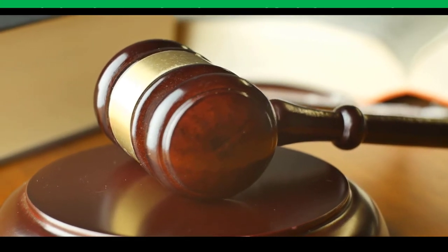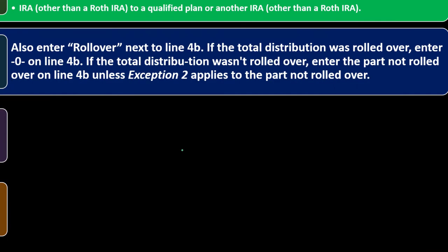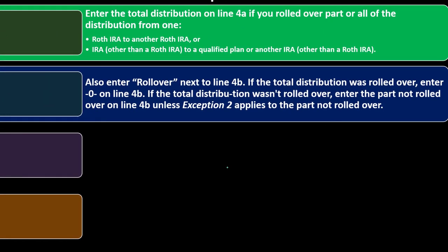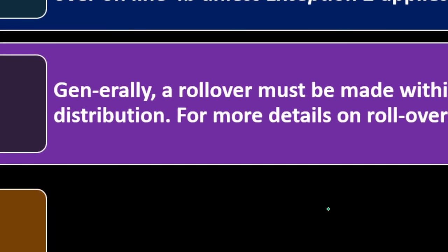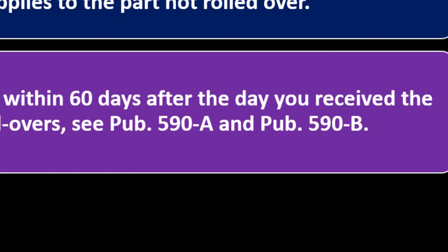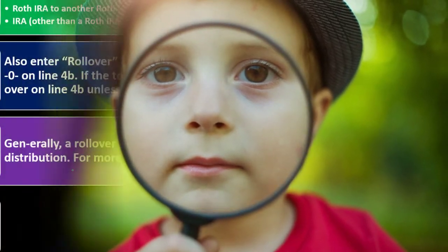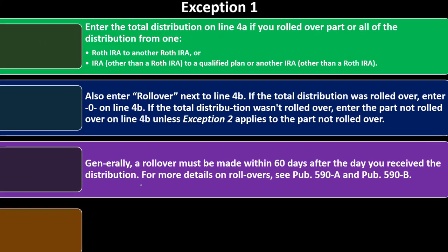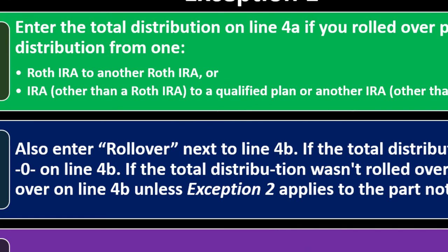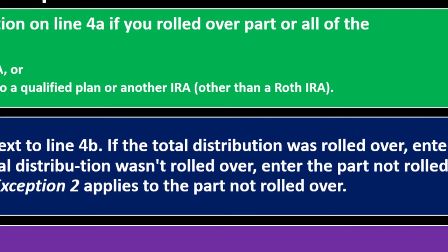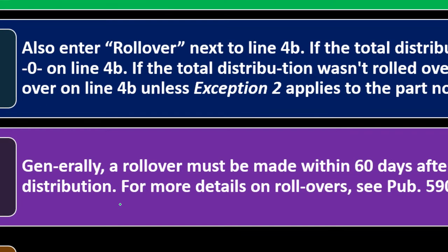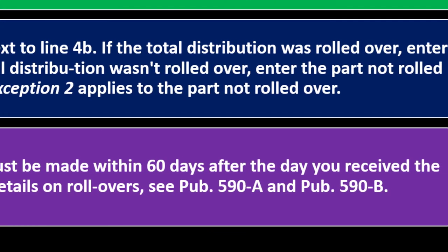Also, enter 'rollover' next to line 4B. If the total distribution was rolled over, enter zero on line 4B. If the total distribution wasn't rolled over, enter the part not rolled over on line 4B unless exception two applies. Generally, a rollover must be made within 60 days after the day you receive the distribution. The cleanest approach is to have one financial institution transfer directly to another — that qualifies as a rollover and is very straightforward.